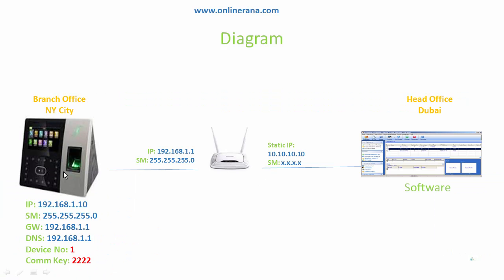I've given my biometric machine, the IP 702, the IP address 192.168.1.10 with subnet mask 255.255.255.0 — it's a C-class. The gateway is 192.168.1.1, and the DNS is also using the router IP 192.168.1.1. The device number identity is set to 1, which will be used in the software to access this device. The communication key is 2222, which is unique and used to connect to the device remotely.